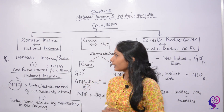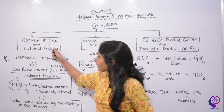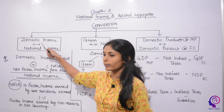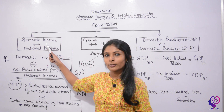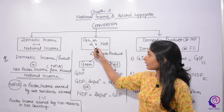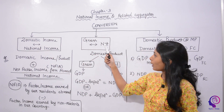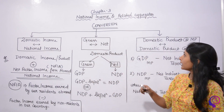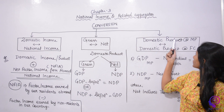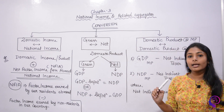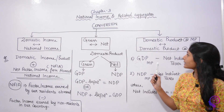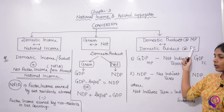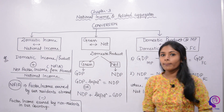In today's lecture, we will see what kind of income can be converted to national income, or national income can be converted to domestic income. We will also see how gross concepts can be converted to net, and how something at market price (MP) can be converted to factor cost, or how factor cost can be converted to market price.